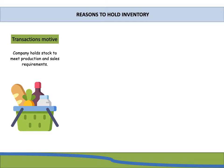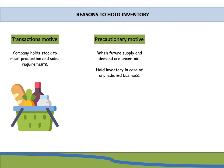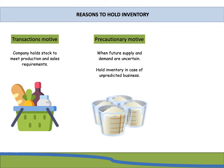The next one would be your precautionary motive. This is when the future supply and demand are uncertain and the company wants to hold inventory in case of unpredictable business. An example could be a cake shop who bakes cakes and needs flour, butter, and a whole bunch of ingredients every day. They might want to keep a little bit of extra stock just in case there is a slightly higher demand, or in case the supermarkets run out of flour.